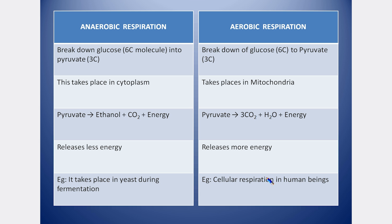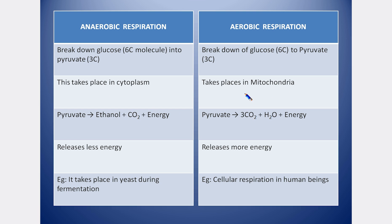In the process of aerobic respiration, the first step is that glucose is converted into pyruvate. Glucose is a 6-carbon molecule and a 3-carbon molecule is converted into pyruvate. In the breakdown, anaerobic respiration occurs in the cytoplasm, whereas aerobic respiration occurs in the mitochondria.